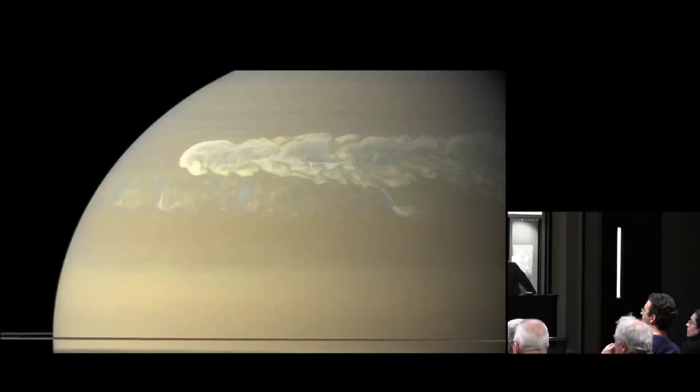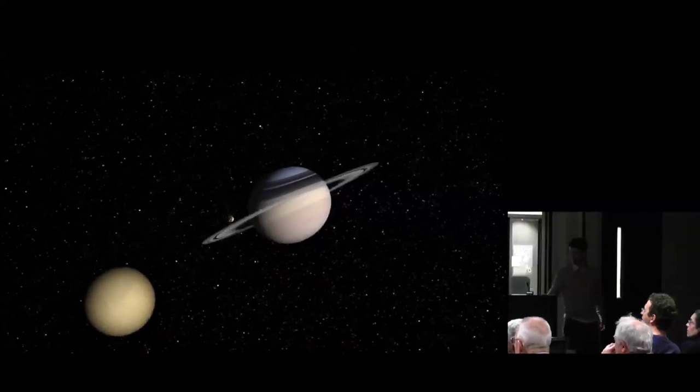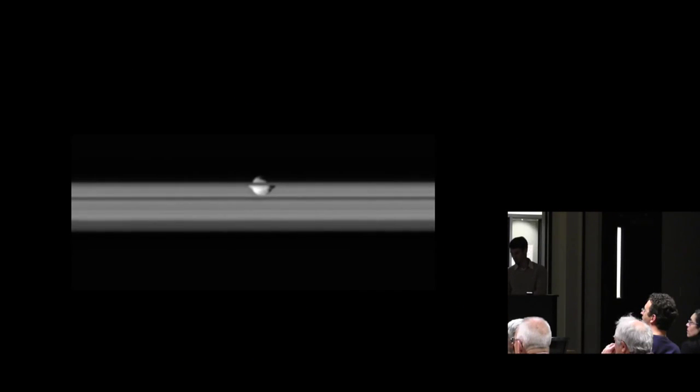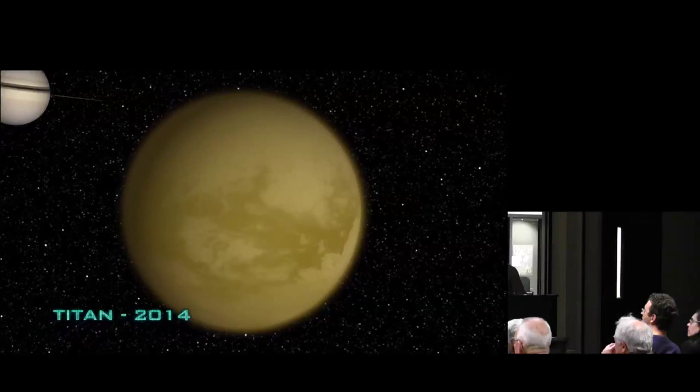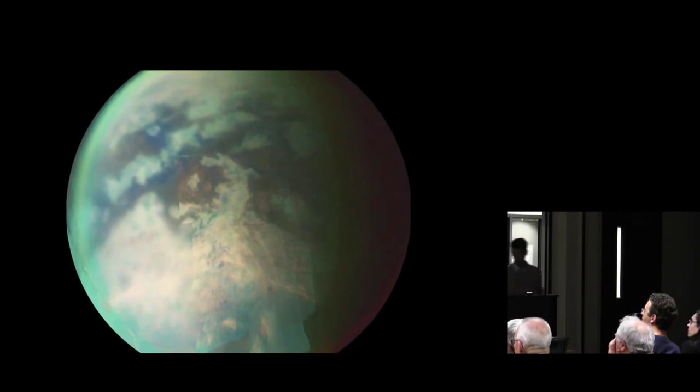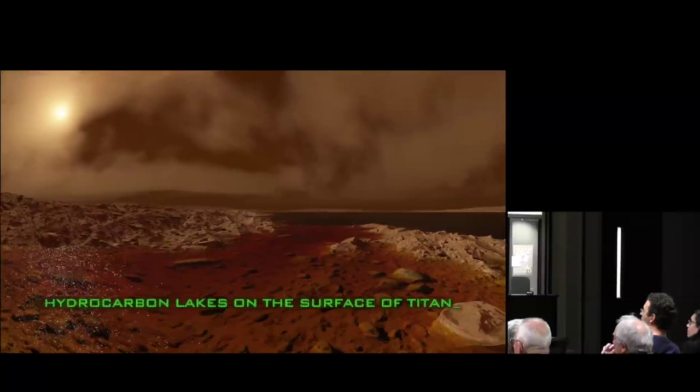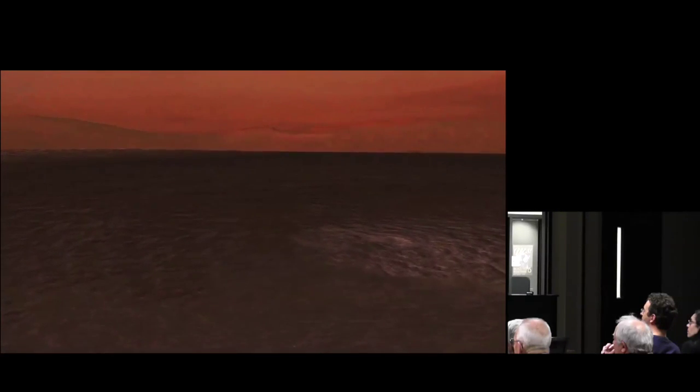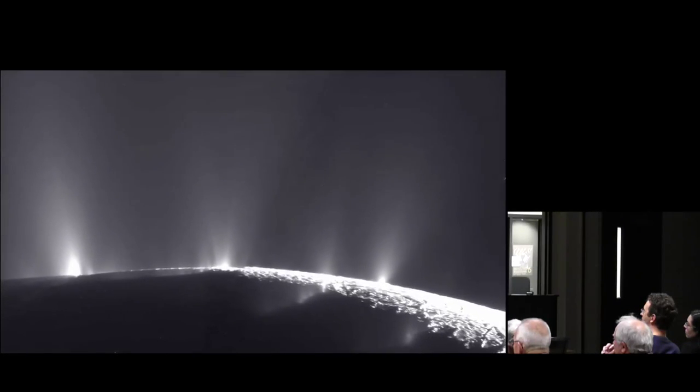Cassini is there in the Saturn system now, has been making discoveries for the last several years, and there's more to come. By studying the satellites in the Saturnian system, we begin to understand something also about the origin of the solar system. There is strong evidence now that most of the surface of Titan is in fact covered with organic material of some kind.